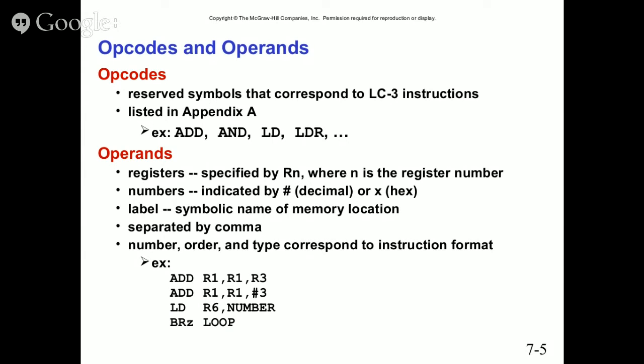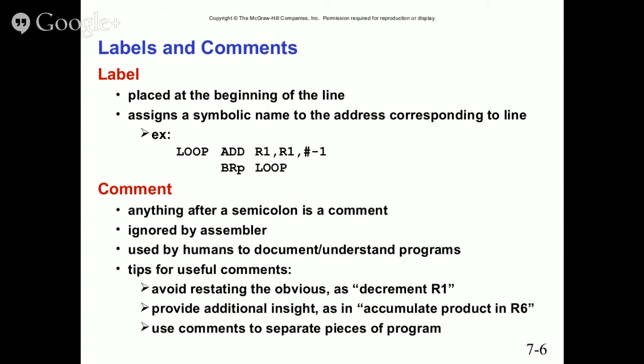Opcodes are reserved symbols that correspond to LC3 instructions. Examples include ADD and LD — LD meaning load — and LDR. Operands include registers specified by RN (where N is the register number), numbers indicated by decimal or hex, and labels as symbolic names for memory locations. These items are separated by commas, with number, order, and type corresponding to the instruction format, as shown in the example below.